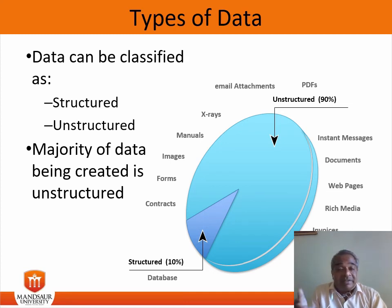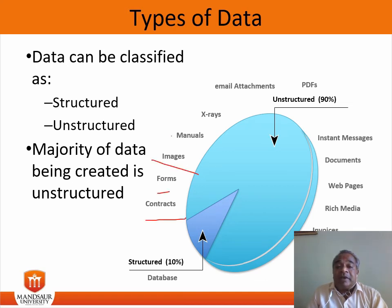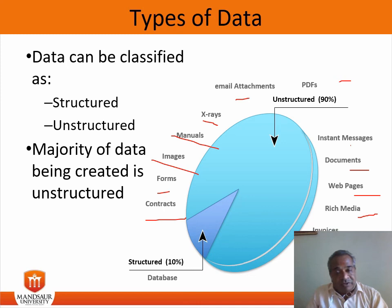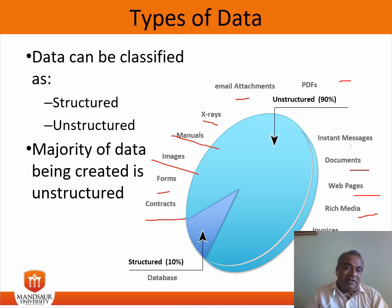Nowadays, there is a huge amount of unstructured data — that is 90 percent — in the form of different contacts, forms, images, manuals, x-rays, emails, PDFs, documents, web pages, rich media, and many other different types. So this is the classification of data based on how to manage this data — structured and unstructured data.